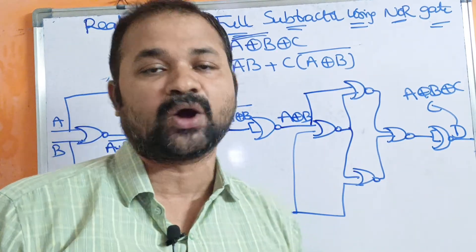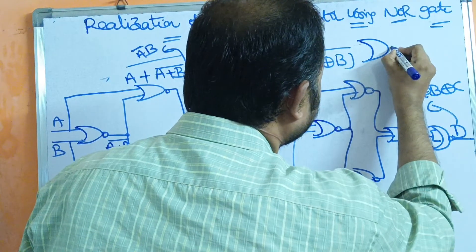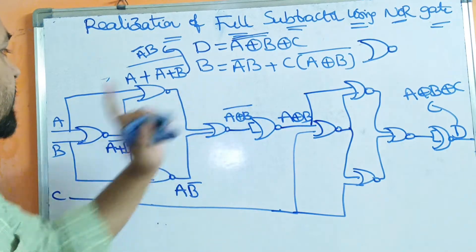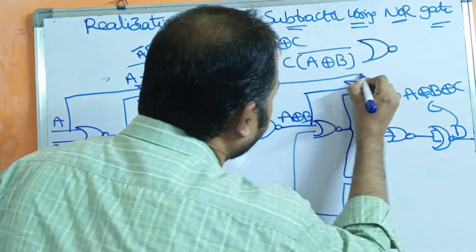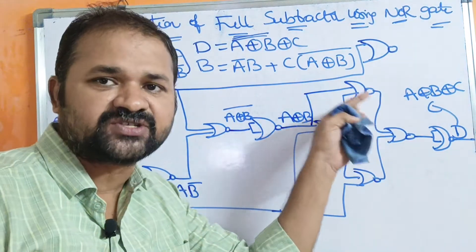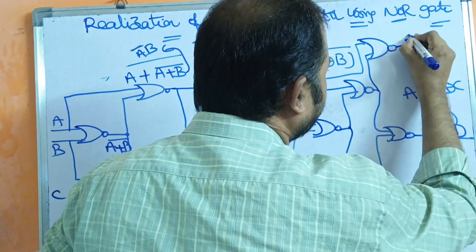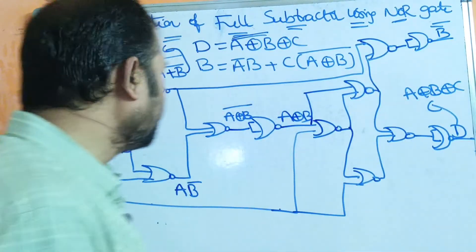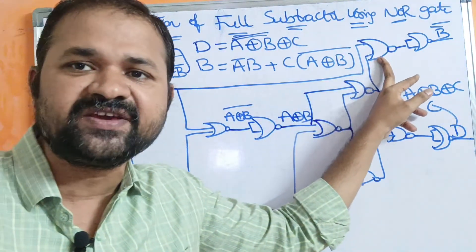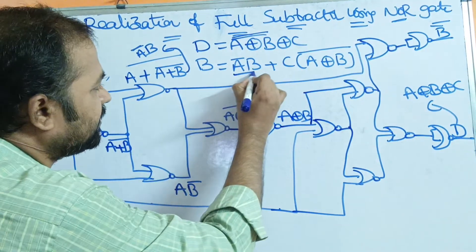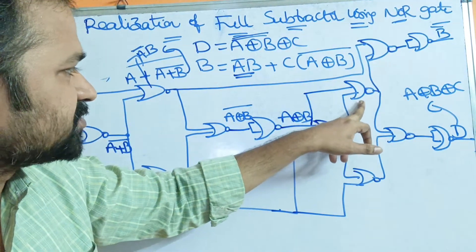Now we need to evaluate the Borrow. For evaluation of Borrow, we need two more NOR gates. The first NOR gate receives input from the output of the second NOR gate (which gives A_bar·B from the XOR structure), as well as C. The second NOR gate also receives input from that same second NOR gate output.